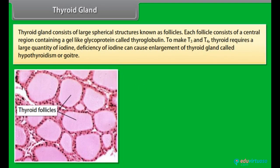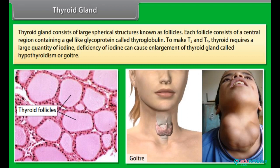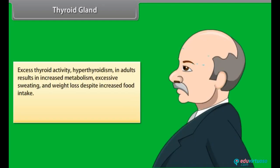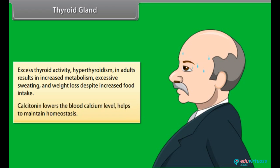The thyroid gland consists of large spherical structures known as follicles. Each follicle contains a central region with a gel-like glycoprotein called thyroglobulin. To make T3 and T4, the thyroid requires a large quantity of iodine. Deficiency of iodine can cause enlargement of the thyroid gland called hypothyroidism or goiter. Excess thyroid activity — hyperthyroidism — results in increased metabolism, excessive sweating, and weight loss despite increased food intake. Calcitonin lowers blood calcium levels and helps maintain homeostasis.